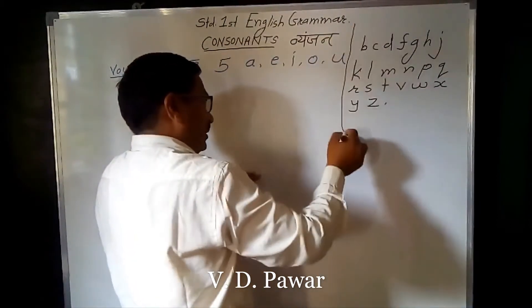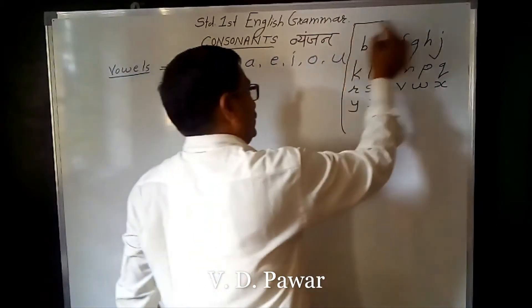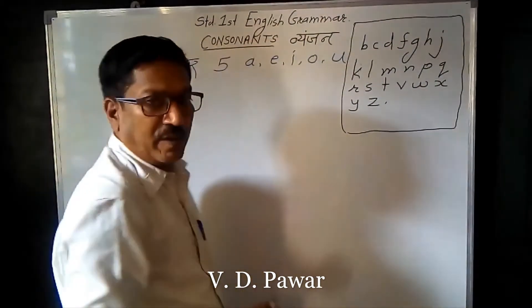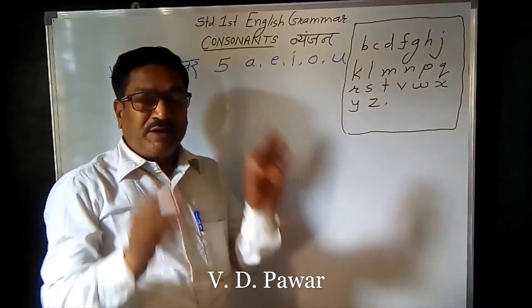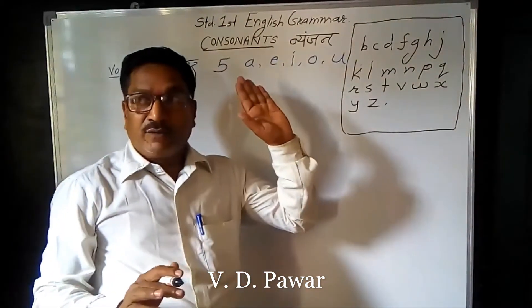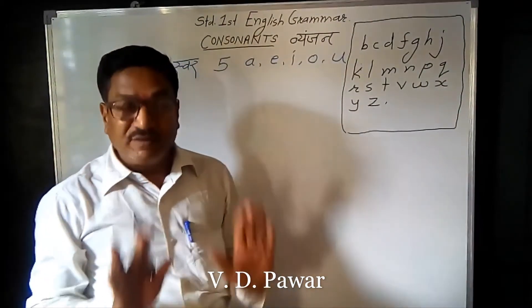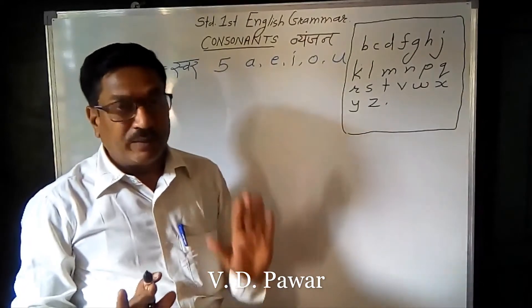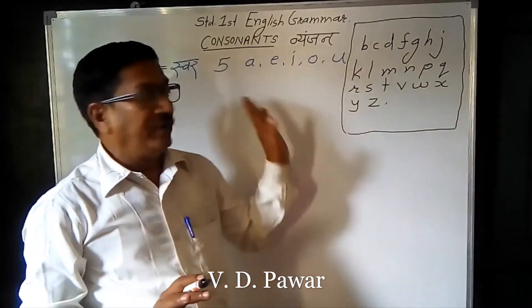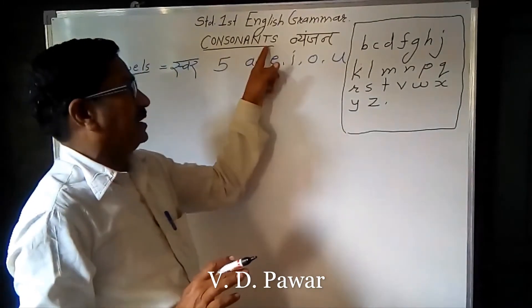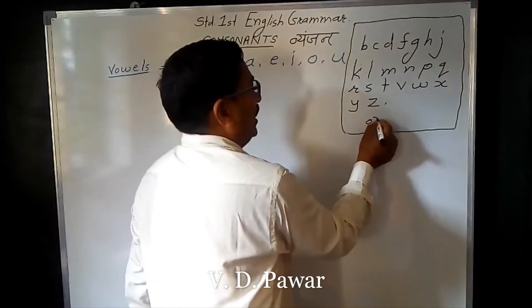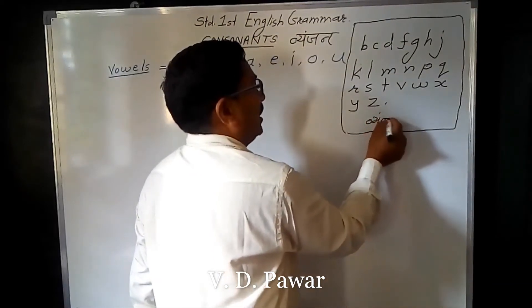ये जो है, ये आपके consonants हैं। 26 में से पाँच vowels को छोड़ने के बाद जो बचेंगे — 21 बचेंगे — ये होंगे आपके consonants। इन्हें 'vyanjan' कहते हैं।